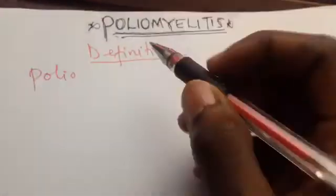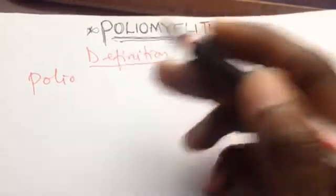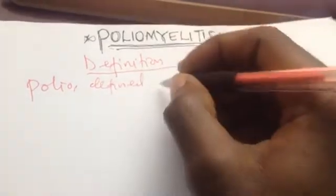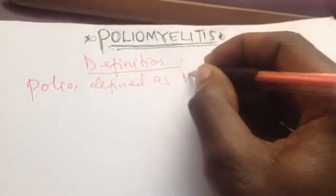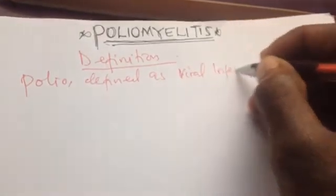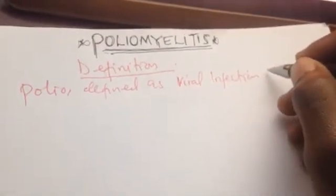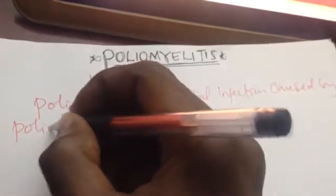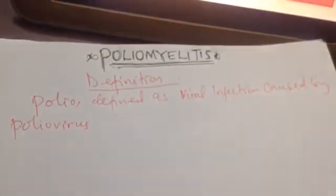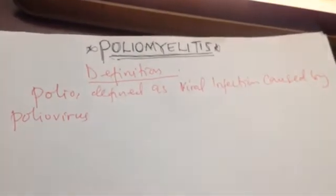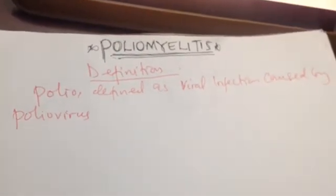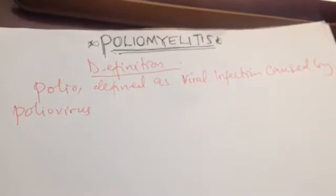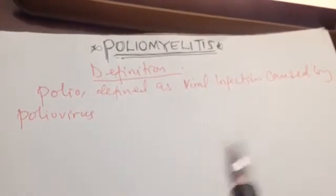By definition, poliomyelitis — abbreviated as polio — can be defined as a viral infection caused by a virus called poliovirus. The name of the virus is not difficult: just poliovirus. This is the virus that causes poliomyelitis, and the symptoms range from asymptomatic cases to a kind of paralysis.